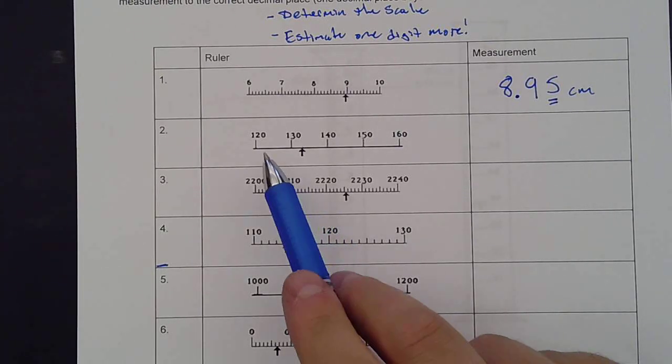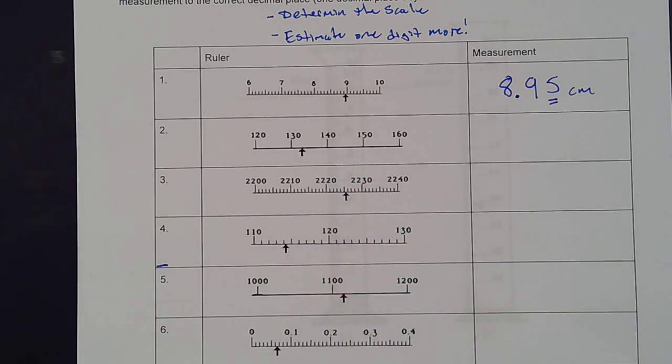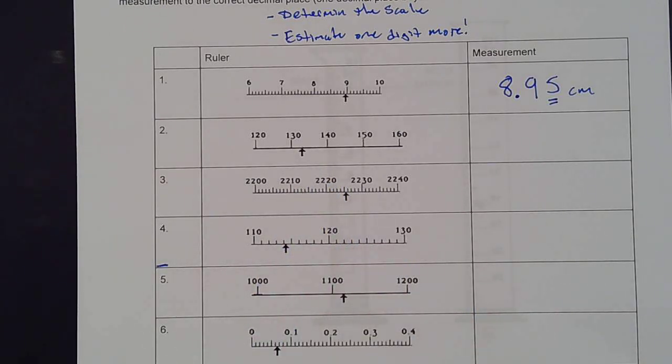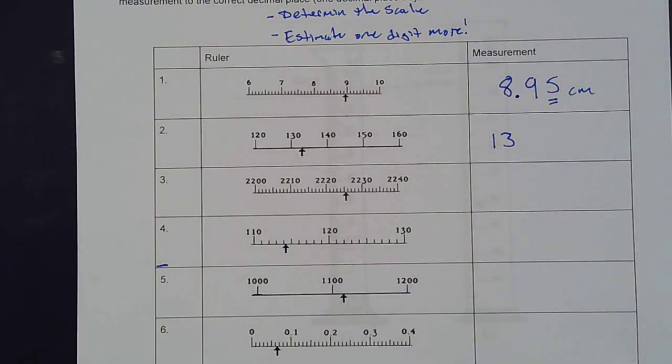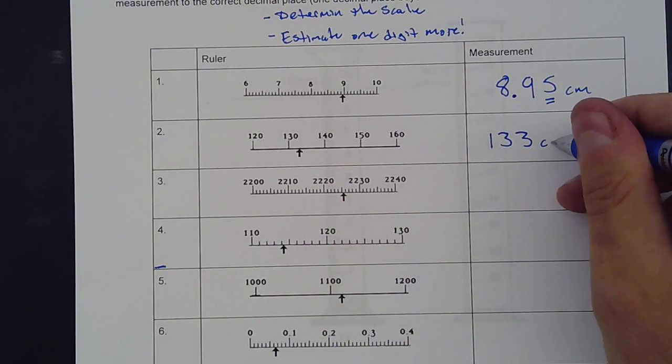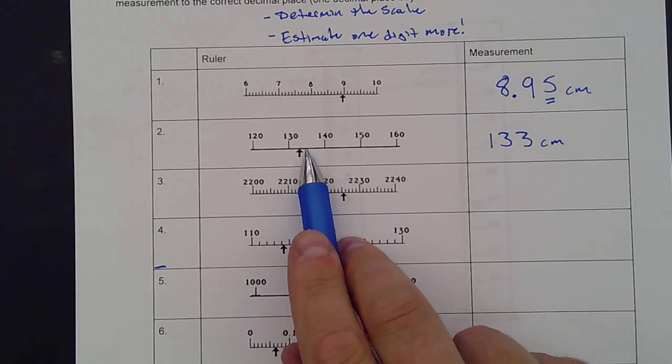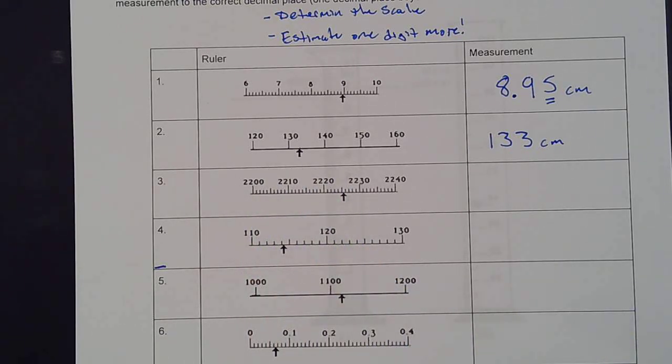Let's look at the next ruler. We have 120, 130, 140. These are going up by tens, which means I have to estimate the ones place. I know it's at least 130, and let's call that 133. Could that be 132, 134? Absolutely, as long as it's reasonable. I can make the case that it's not halfway because I can see that pretty well.